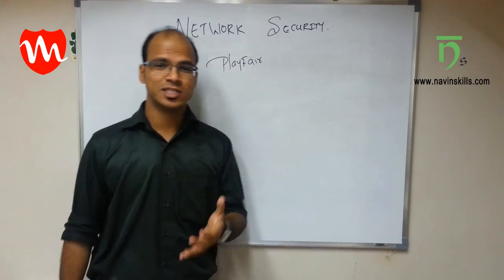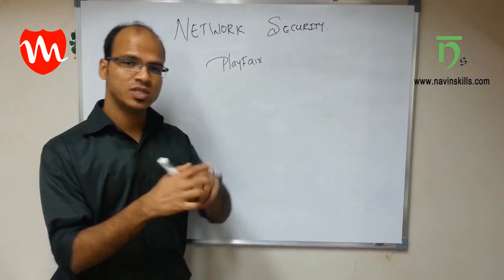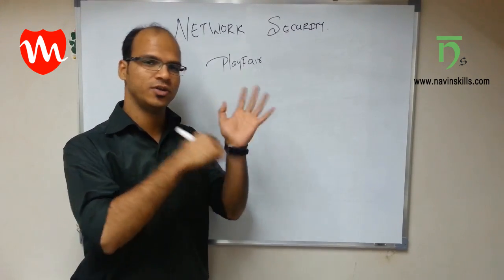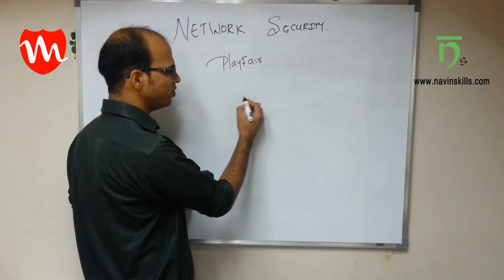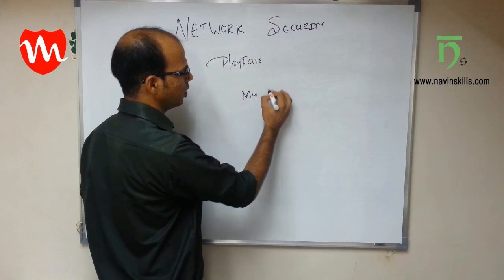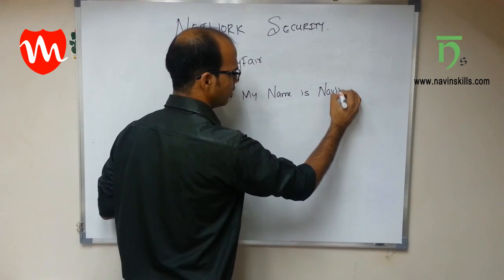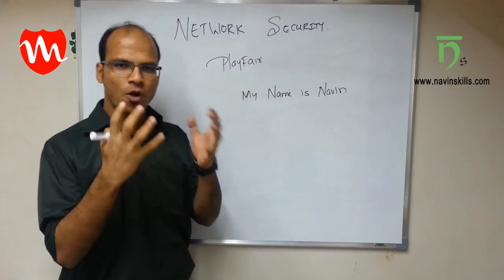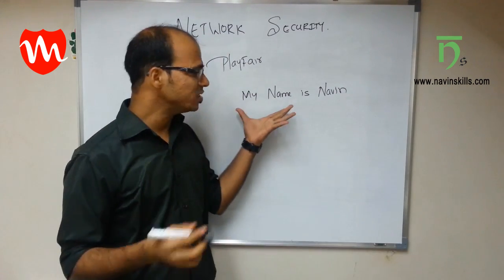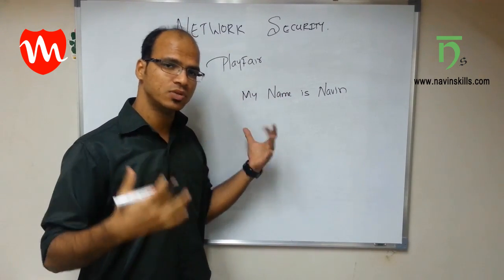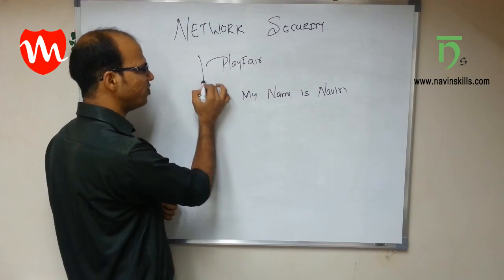In this video we'll talk about something called Playfair. Playfair is the next technique for substitution cipher, so if you haven't watched the last video, do check that video and come back. We'll talk about Playfair — let's suppose I want to convert the text 'my name is Navin' into a cipher format. So this is a readable format and I want to convert it into cipher format. For this you need two things: first, a plain text.